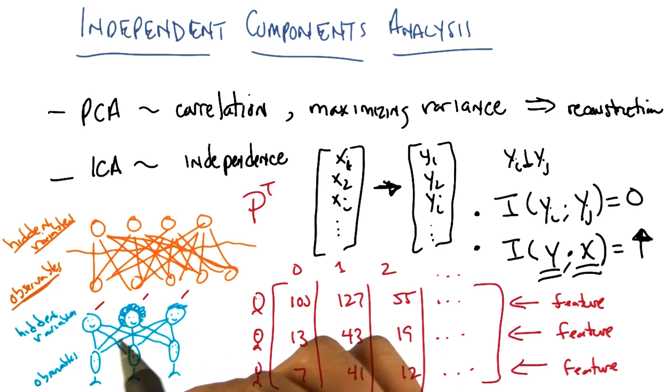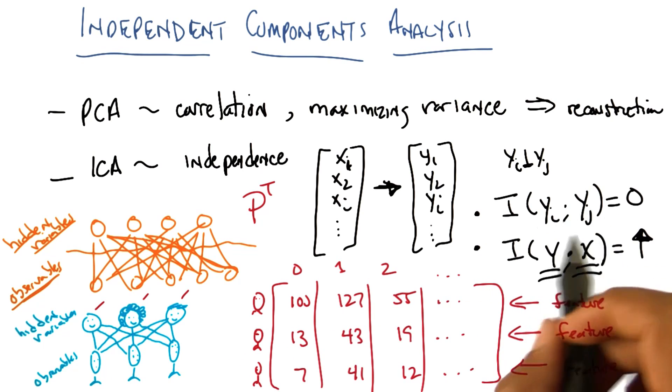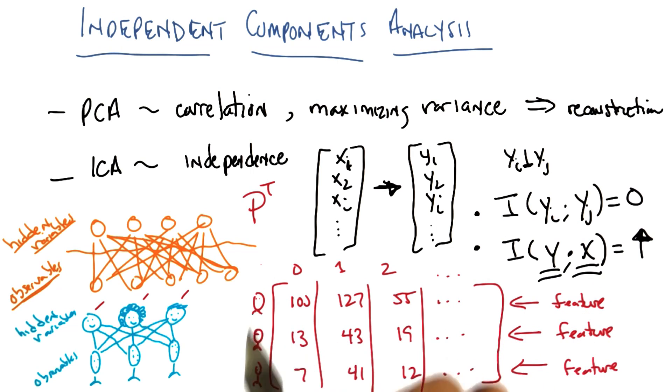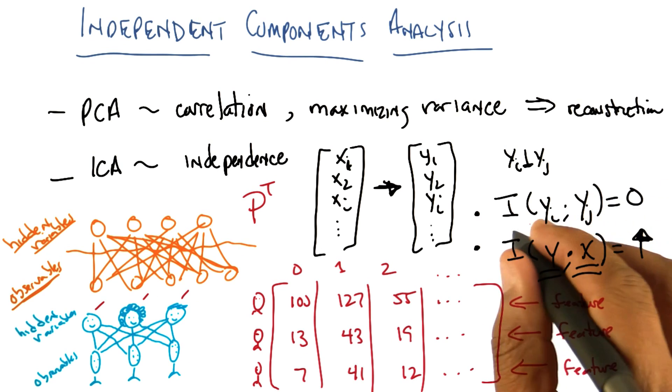So if that turns out to be true, what independent components analysis is trying to do is trying to recover features. In this case, it turns out to corresponding to individual speakers, such that their sound waves, or the values that you see, are statistically independent of one another. And that's what this does.